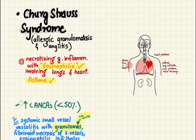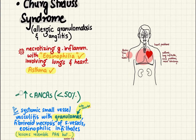Next we have Churg-Strauss syndrome, also known as allergic granulomatosis and angiitis. Remember three key words: allergic, eosinophilia, and asthma. It has granulomas chiefly populated by eosinophils and mainly affects the lungs and heart. In this case we have increased c-ANCA — so the pattern goes c-ANCA, then p-ANCA, then c-ANCA again.